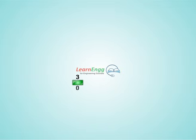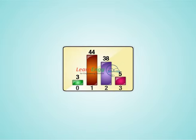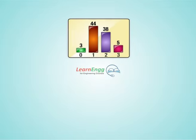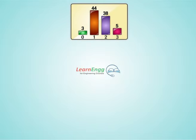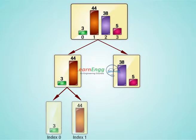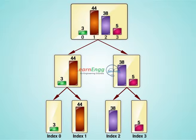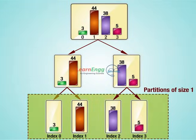Our approach in merge sort algorithm will be entirely different. What we are going to do here is split this list into sublists, then go on dividing those sublists until we get each element into partitions of size 1. Each partition takes on a distinct color.